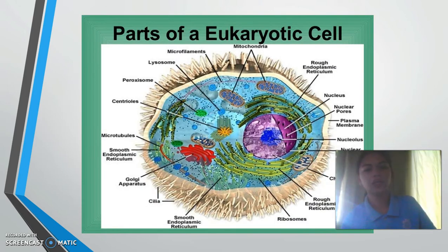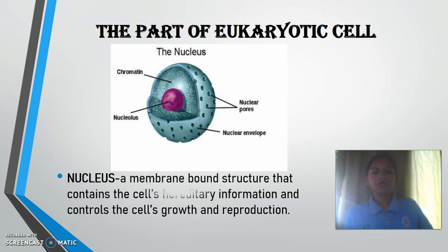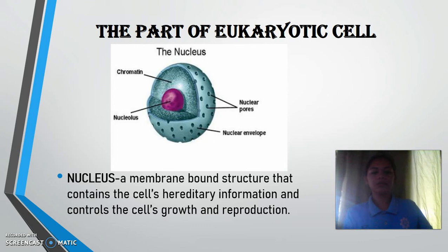The first part of the eukaryotic cell is the nucleus. The nucleus is a membrane-bound structure that contains the cell's hereditary information and controls the cell's growth and reproduction.